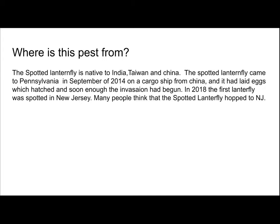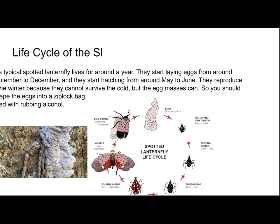In 2018, the first lanternfly was spotted in New Jersey. Many people think that the spotted lanternfly kind of hopped to New Jersey. So what is the life cycle of the spotted lanternfly? The typical spotted lanternfly lives for around a year. They start laying eggs from around September to December, and they start hatching from around May to June. If you see egg masses like shown here, you should scrape them into a Ziploc bag filled with rubbing alcohol. This is an image of the life cycle of the spotted lanternfly.